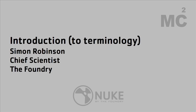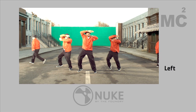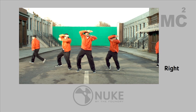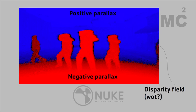The first keywords we're looking at here are left and right — very important. This is one of the shots we'll be working on during the day; it's what I'm using as a reference to describe some terminology before we start. This is a useful diagram in terms of stereo terms. We've got positive parallax, negative parallax, and this thing called a disparity field.